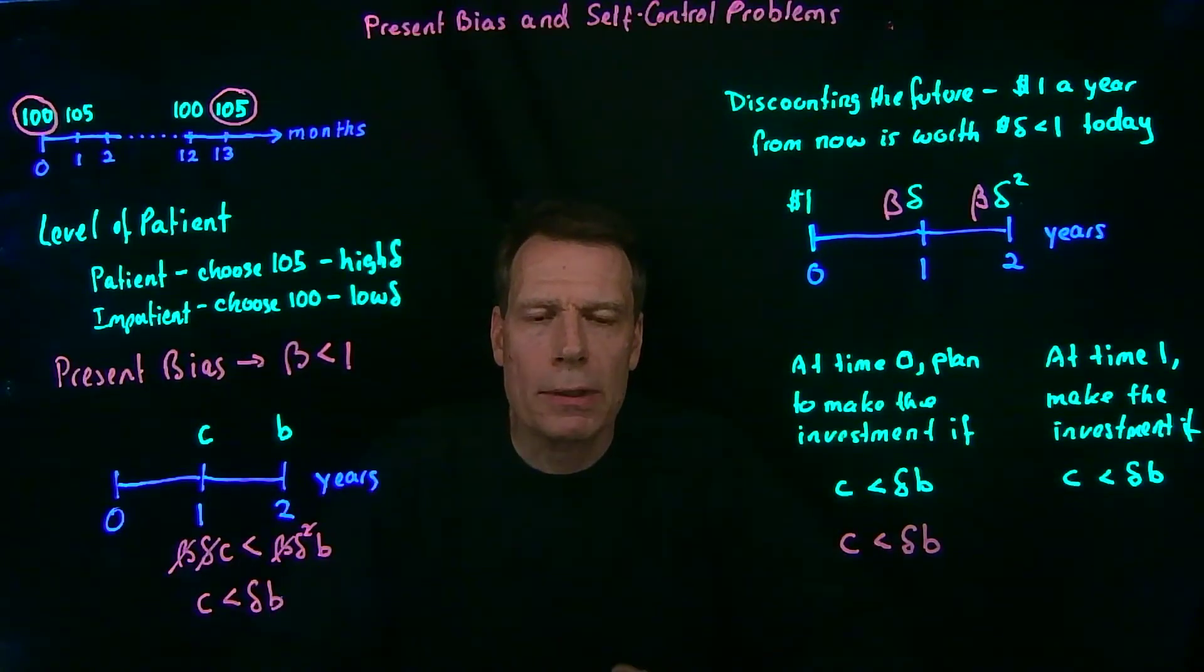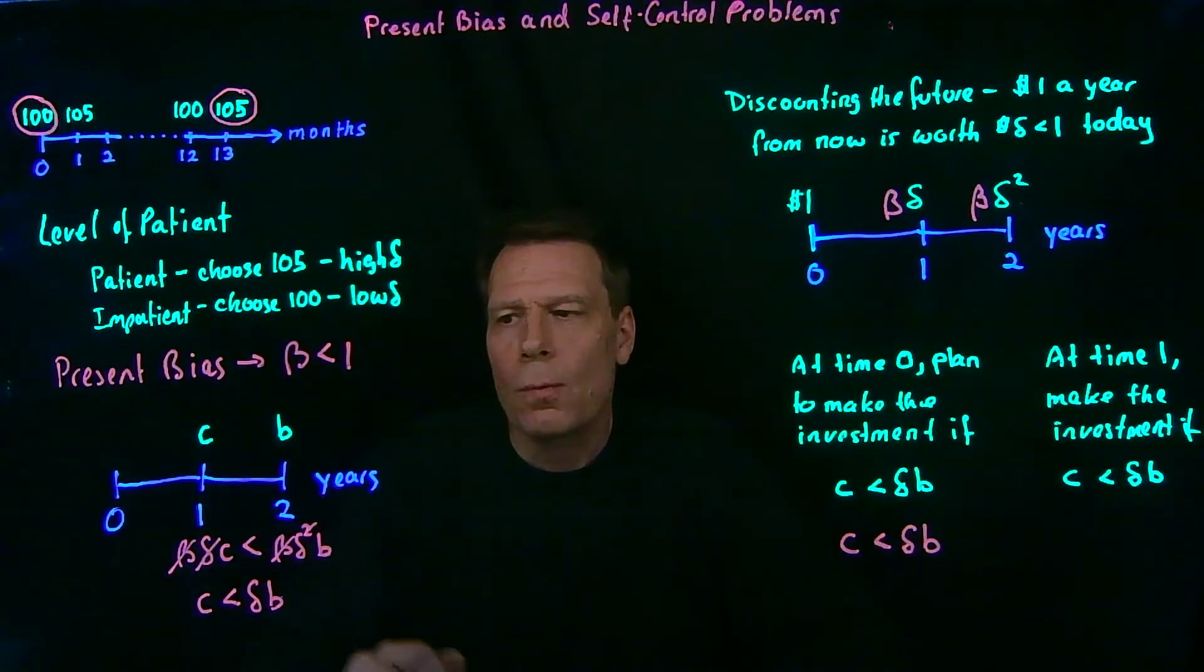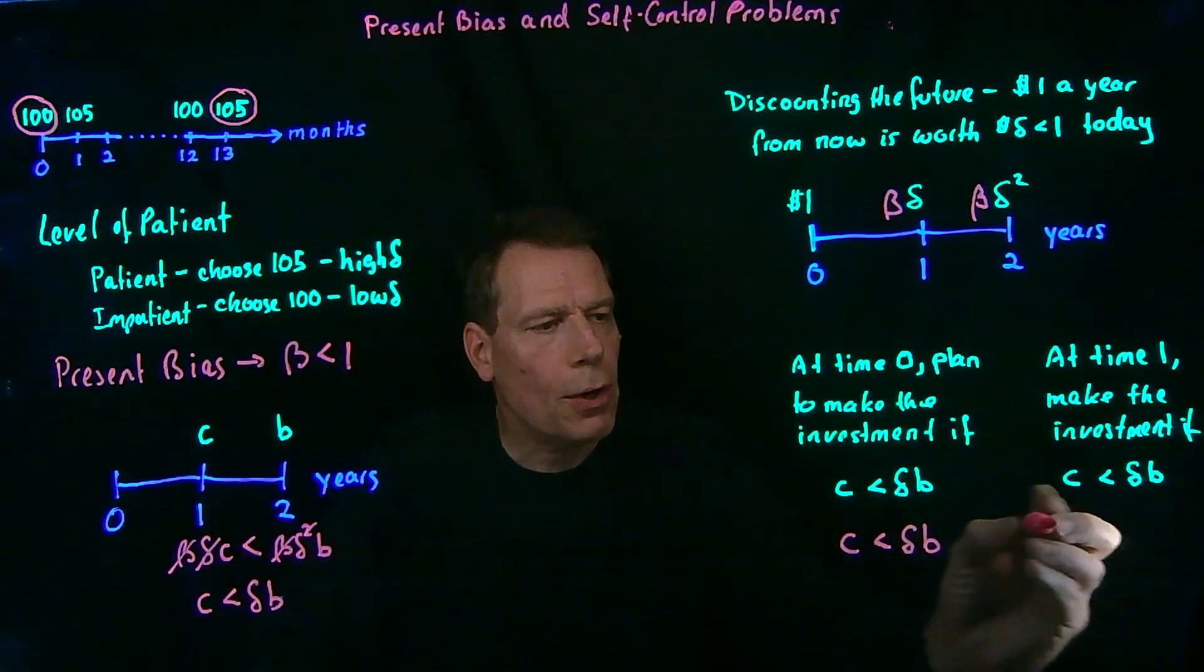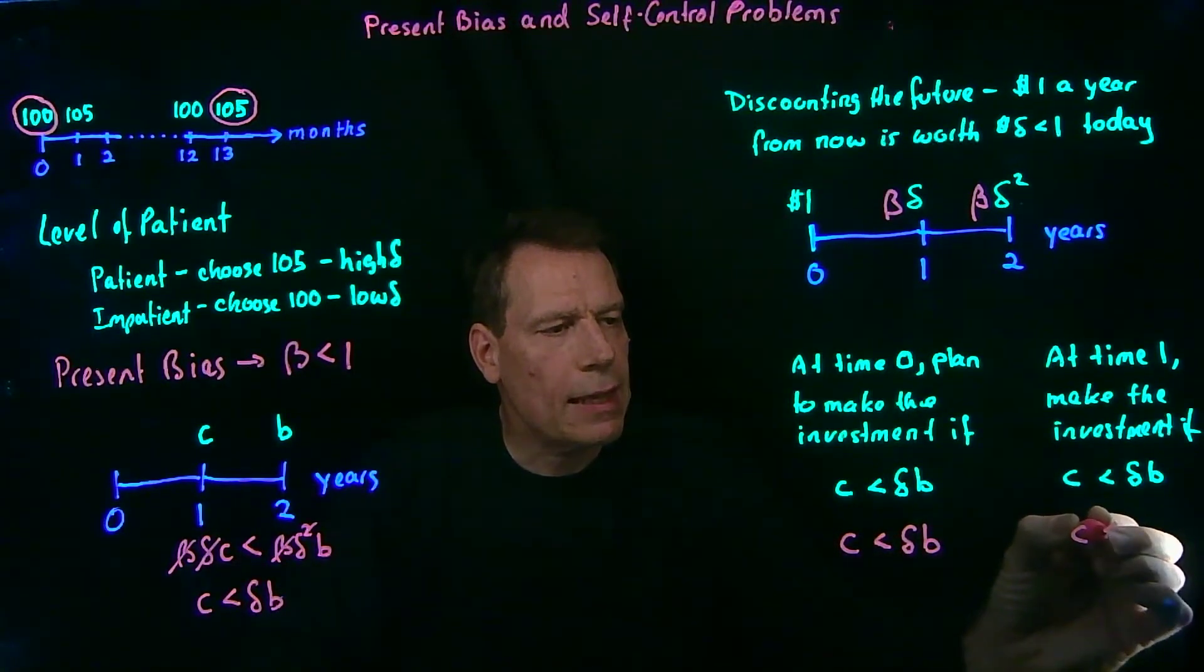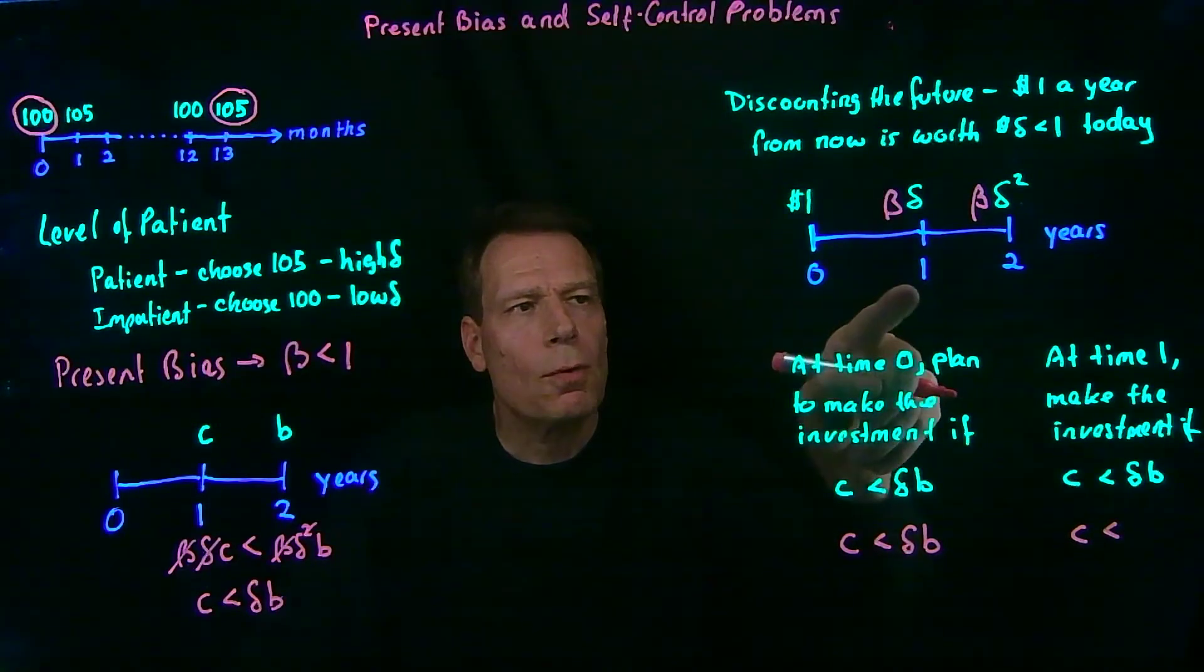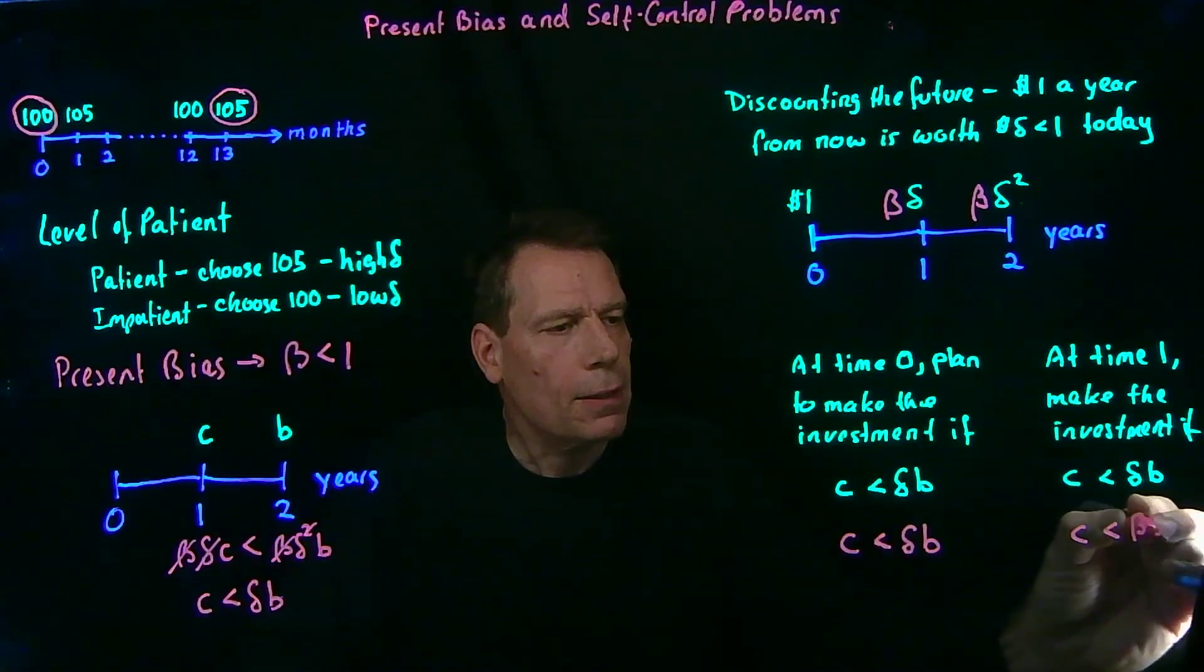But now fast forward a year. The future has become the present. And you now have to decide, will you actually make the investment? So now we are sitting at time one. We don't have to discount the cost, because it's happening immediately. So the cost now has to be less than the discounted value of the benefit, which will happen a year from now. So we have to discount that by what's relevant for one year from now, beta delta b.